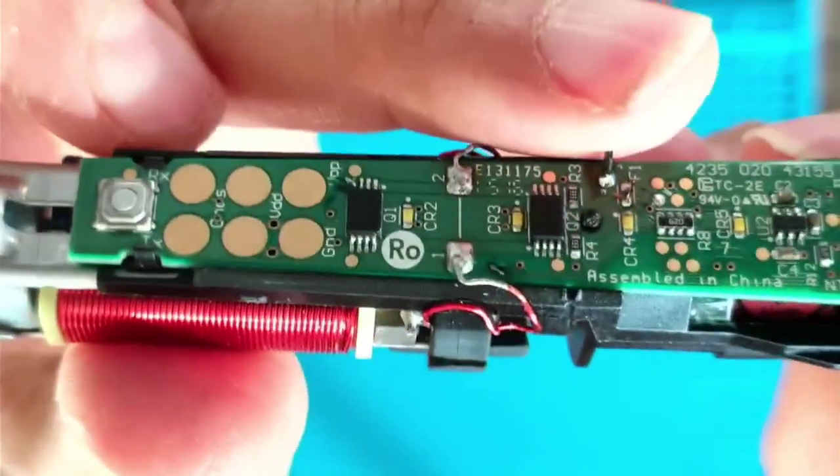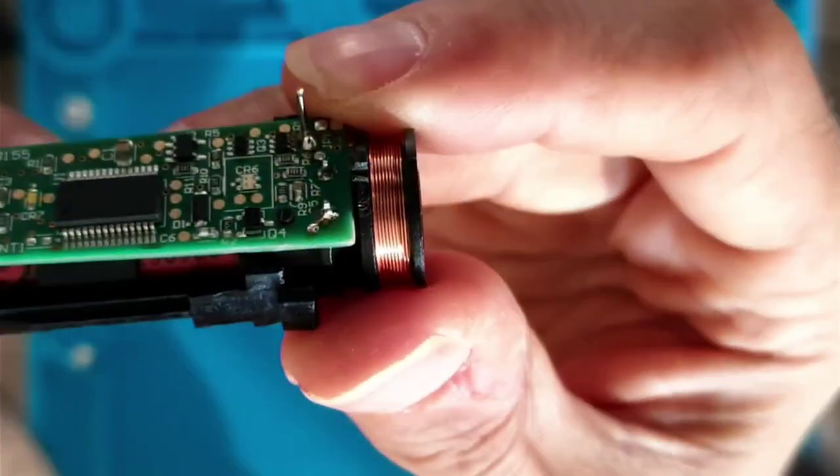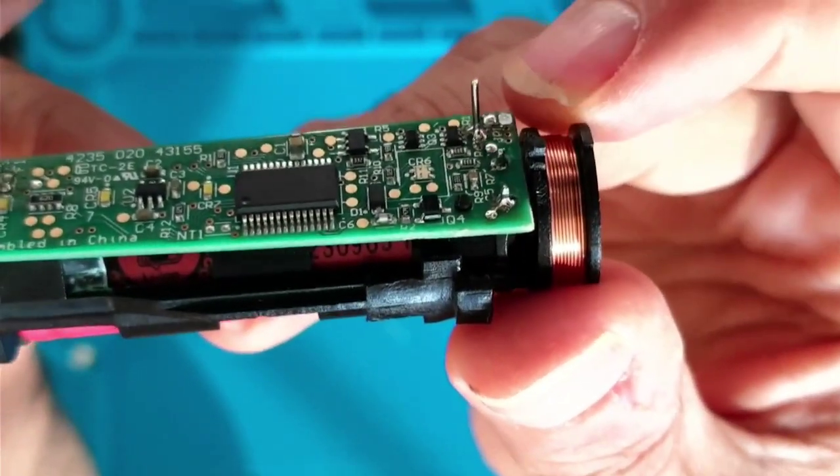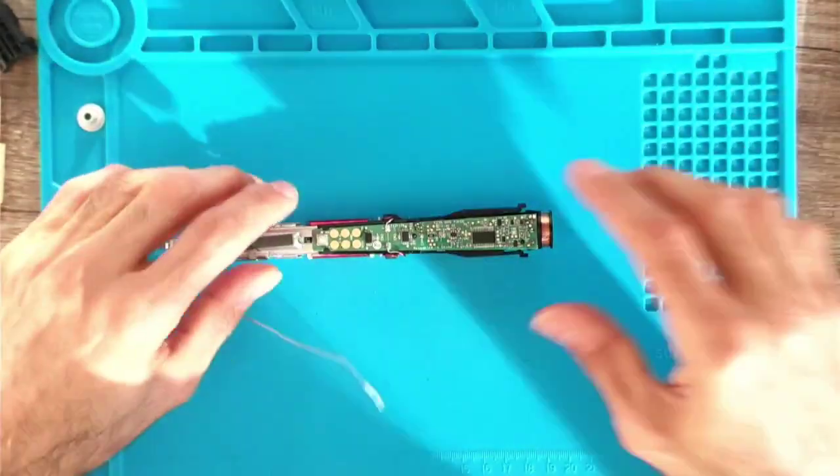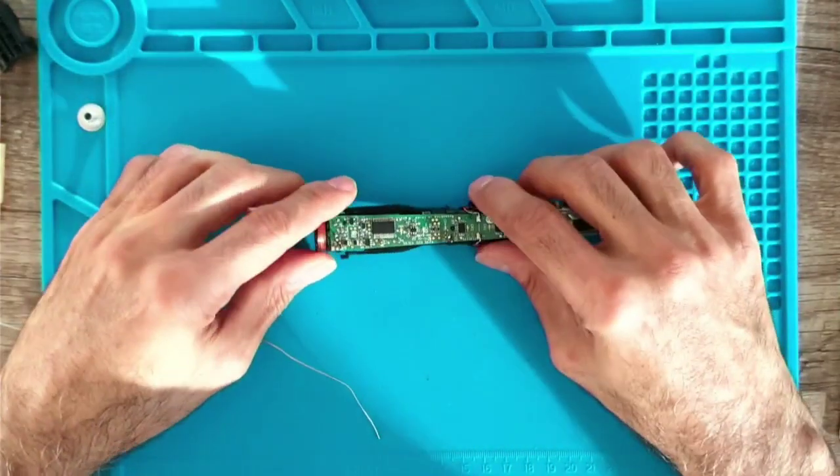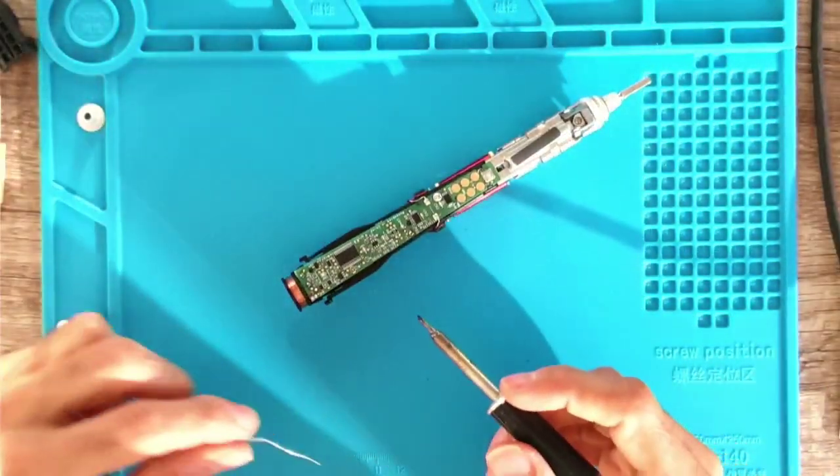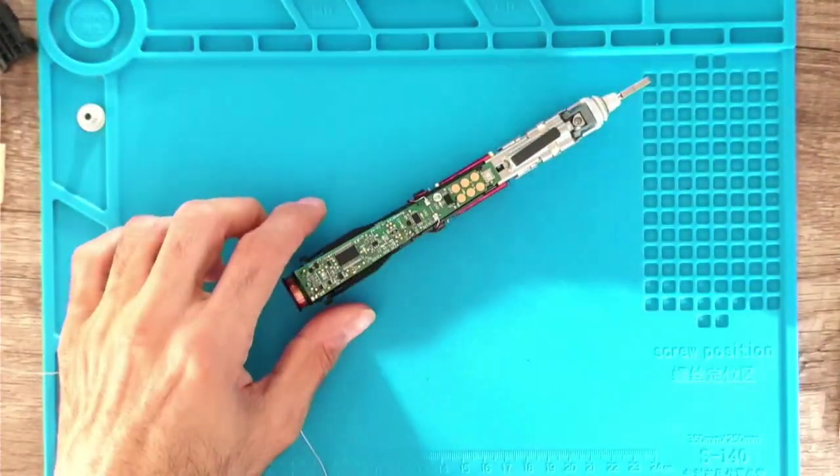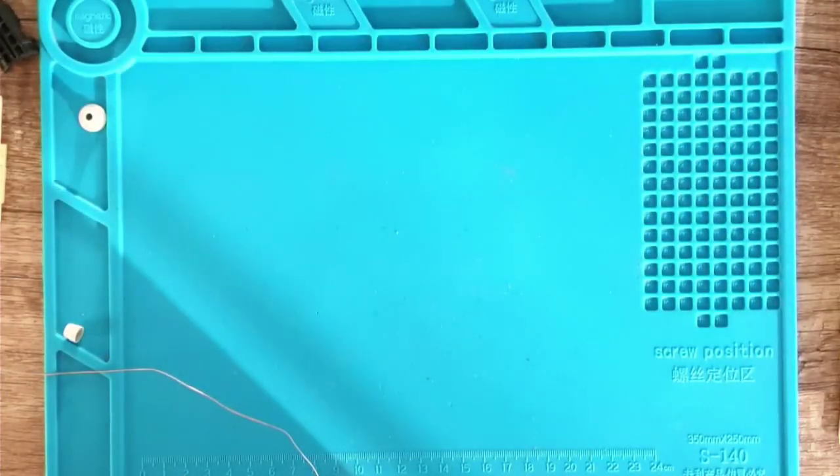You can see the leads, this is one of them. Now I'm going to press the button. Yeah, nothing happens. I need to bridge the on-off, the two on-off pads. I'll just take a quick solder.